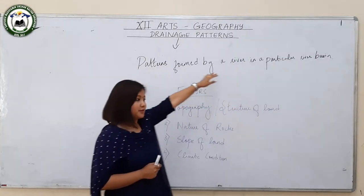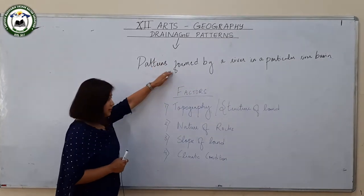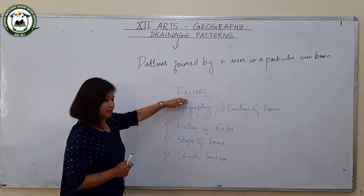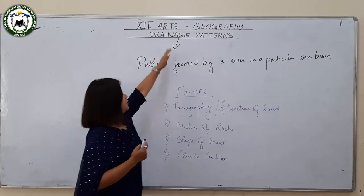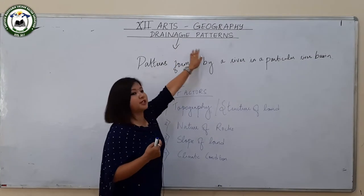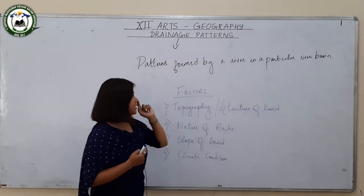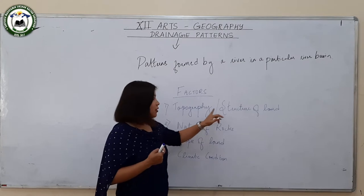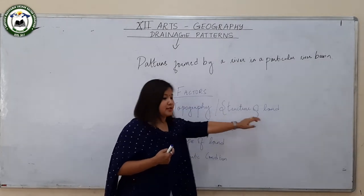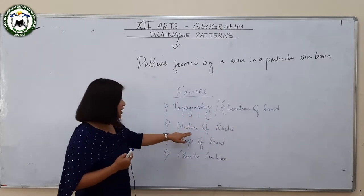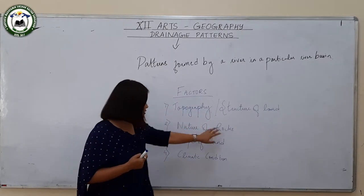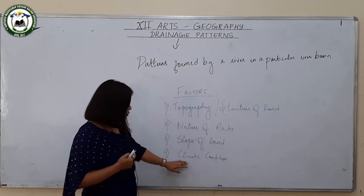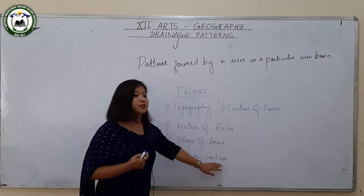Now coming to the factors which govern different types of drainage patterns: number one is topography or structure of land; number two is nature of rocks; number three is slope of land; and number four is climatic condition.